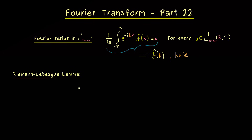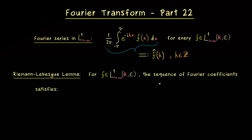One famous answer is the so-called Riemann-Lebesgue lemma. For historical reasons it is still called a lemma, but it is a really important result in the theory of Fourier series. It tells us that for any L1 function, the sequence of Fourier coefficients is convergent for k to plus or minus infinity — more precisely, this limit exists and is equal to zero.